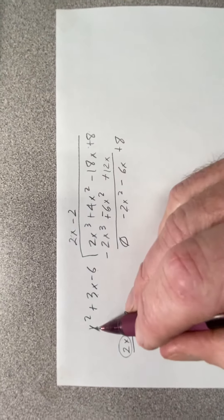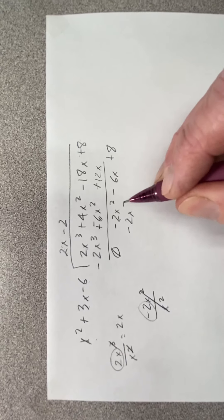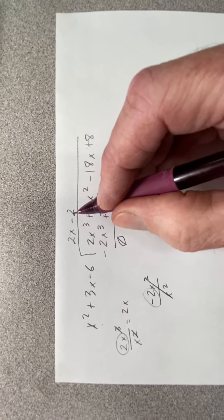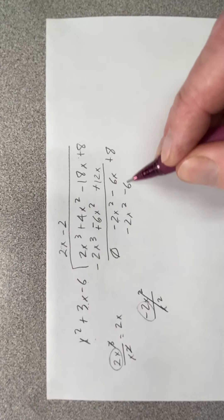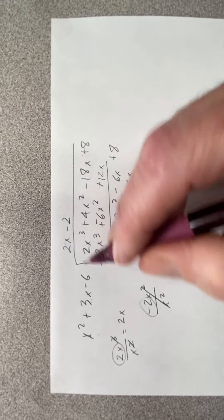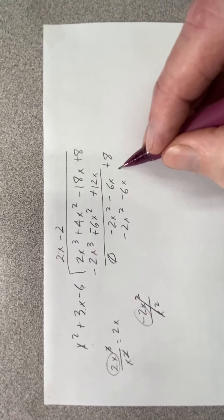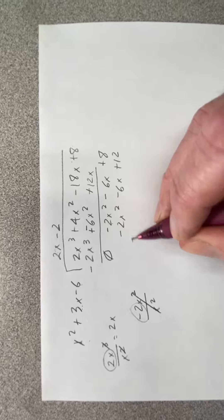So I have negative 2 times x squared is negative 2x squared. Negative 2 times 3x is negative 6x. And negative 2 times negative 6 is a positive 12.